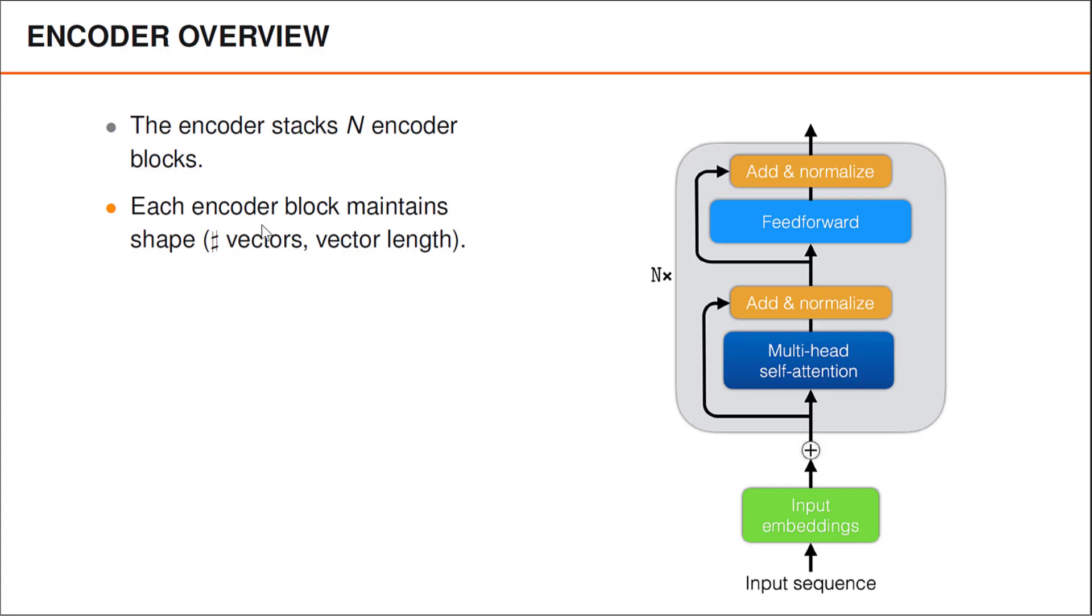it returns another vector of the same length. Therefore, the number of input and output vectors never changes, and all vectors also have the same length. This makes it very simple to stack these encoder blocks on top of each other. When I say that we stack them on top of each other, I simply mean that they are placed after each other, and that the input first passes through the first block, then through the second block, and so on.